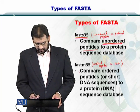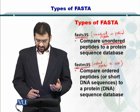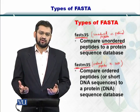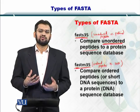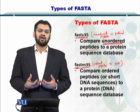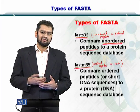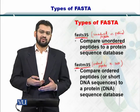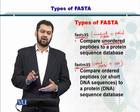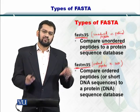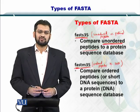The next is the FASTM35, wherein you have an ordered set of peptides versus a DNA database. When referring to a DNA or RNA database, it is essentially a nucleotide database. All six open reading frames that can be created by each sequence within the database are compared, and then the protein sequence is compared with your query sequence.